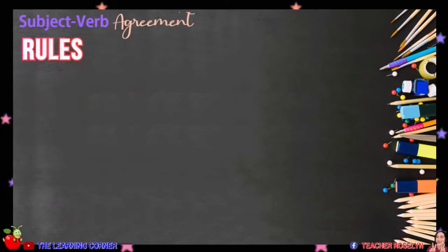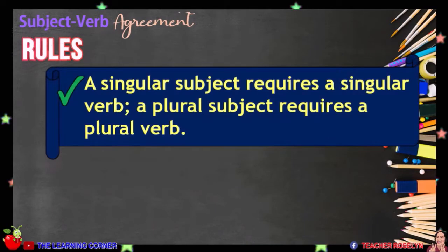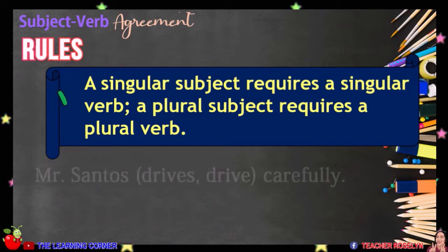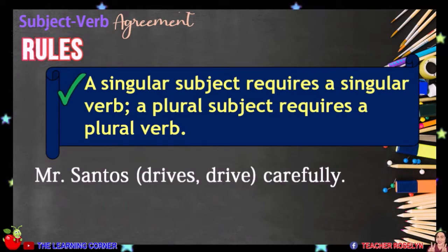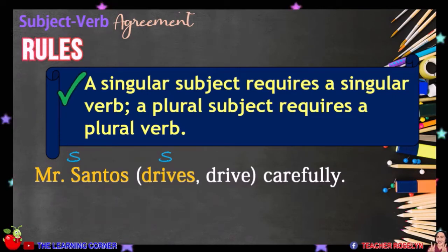Here are some rules in subject-verb agreement. Let us begin with the most basic rule: a singular subject requires a singular verb, and a plural subject requires a plural verb. Singular means only one, while plural means more than one or many. For example, the subject is Mr. Santos, and since it is singular, we will use the verb DRIVES. Remember, if the verb ends with S or in S form, it is singular. If it is in base form, it is plural. Mr. Santos drives carefully.